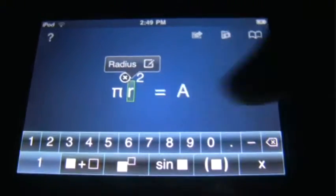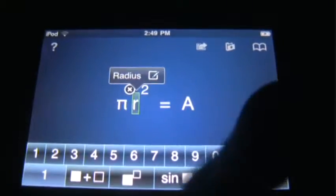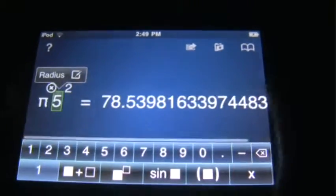And so then you can just put in a number. So let's just do five. And then it'll give you the area right here instantaneously. It's amazing.